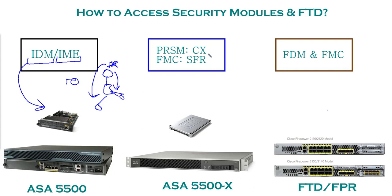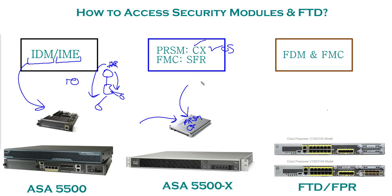Coming towards next-generation firewalls, you can have the Context Security OS installed on an SSD drive, which is accessed via PRSM — a small piece of software used to manage Context Security. You can use your web browser to access PRSM and configure policies like IPS and URL filtering. If you need to manage multiple Context Security devices, you need a PRSM server that can sit remotely at an HQ and manage all the Context Security sensors across locations.